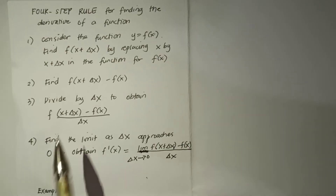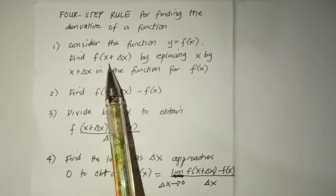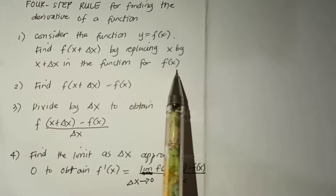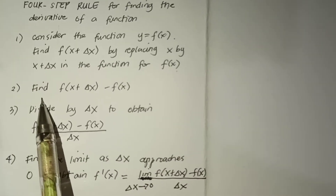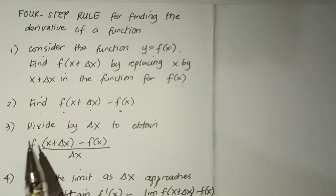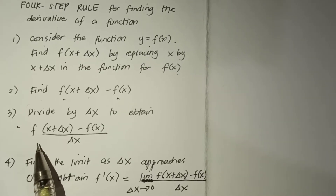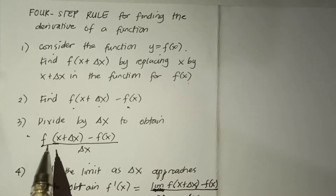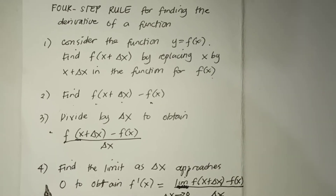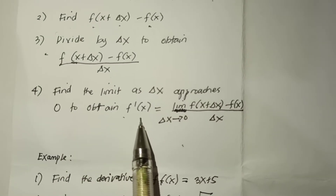The first step is we need to consider the function y = f(x), then find f(x + Δx) by replacing x by x + Δx in the function. The second step is we need to find f(x + Δx) minus f(x). The third step is divide by Δx to obtain [f(x + Δx) - f(x)] / Δx. And number four, find the limit as Δx approaches zero to obtain the first derivative.